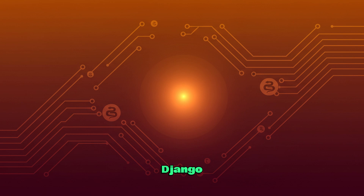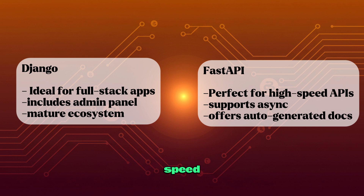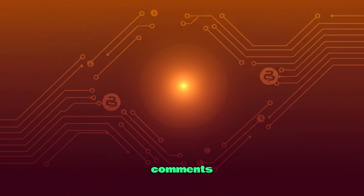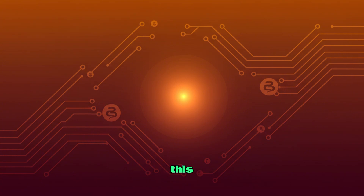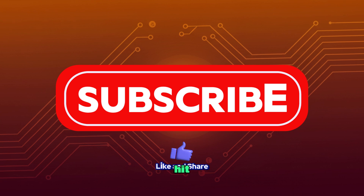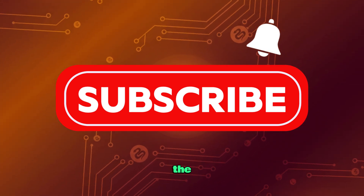So, which should you choose? Pick Django if you're building a full-stack app, need an admin panel, or want a mature ecosystem. Go for FastAPI if you're crafting a high-speed API, love async, or want auto-generated docs. Both are awesome — it depends on your project. What's your next project? Drop it in the comments and let me know if you're team Django or FastAPI. If you found this helpful, smash that like button, subscribe for more Python tutorials, and hit the bell so you don't miss our next video. Thanks for watching!